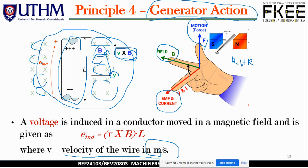The middle finger represents the generated EMF. Using the magnetic bar diagram with north and south poles, the conductor moves upward between the poles in the direction from N to S. Due to this phenomenon, an EMF is generated. The induced voltage equals v·B·L, where v is the velocity of the wire in meters per second.